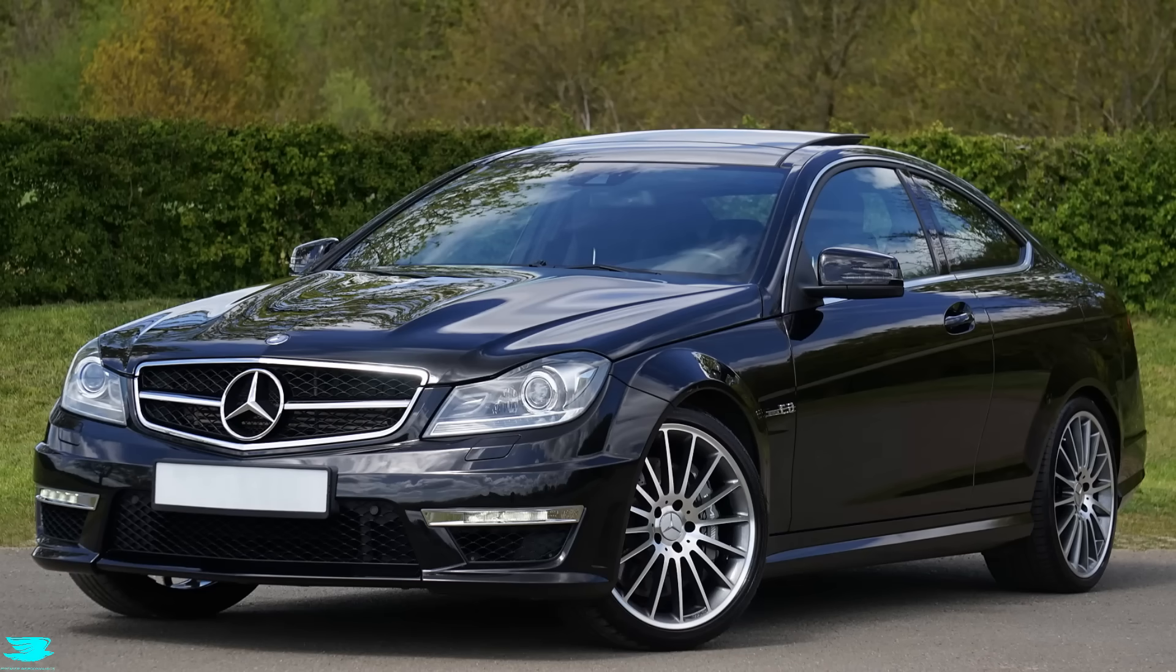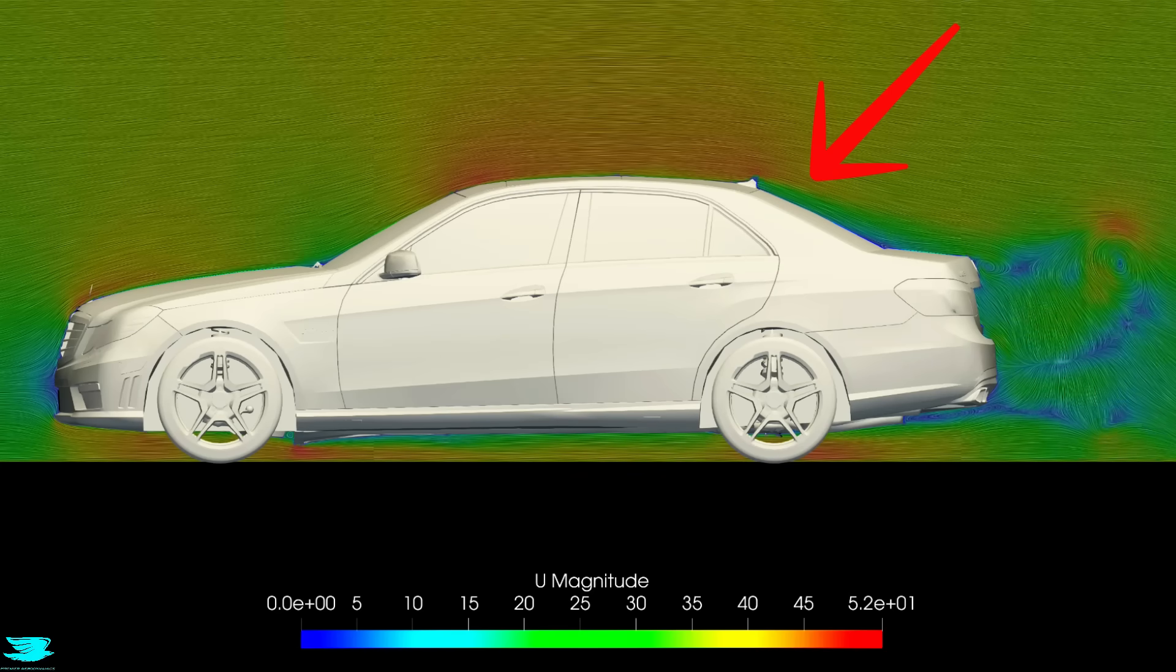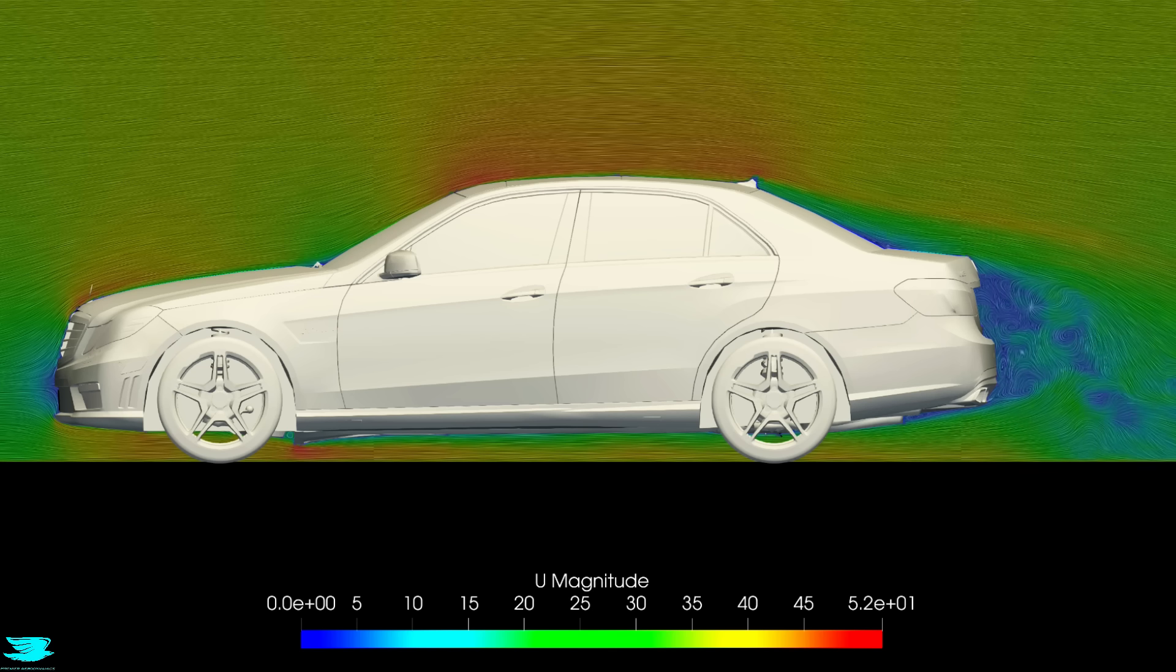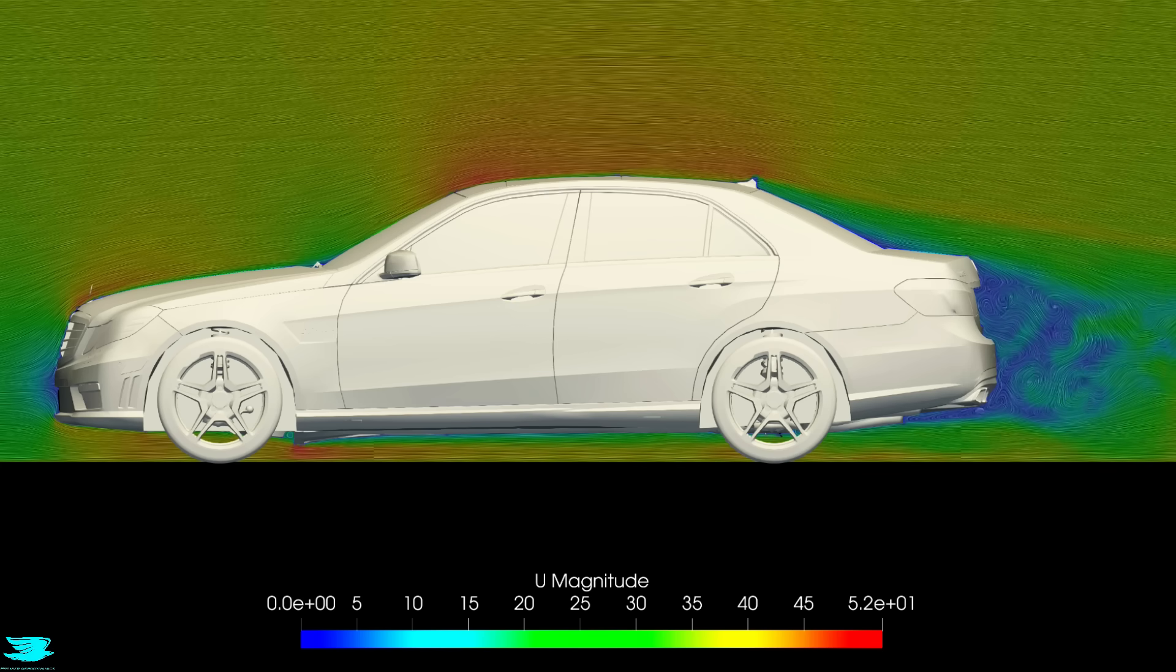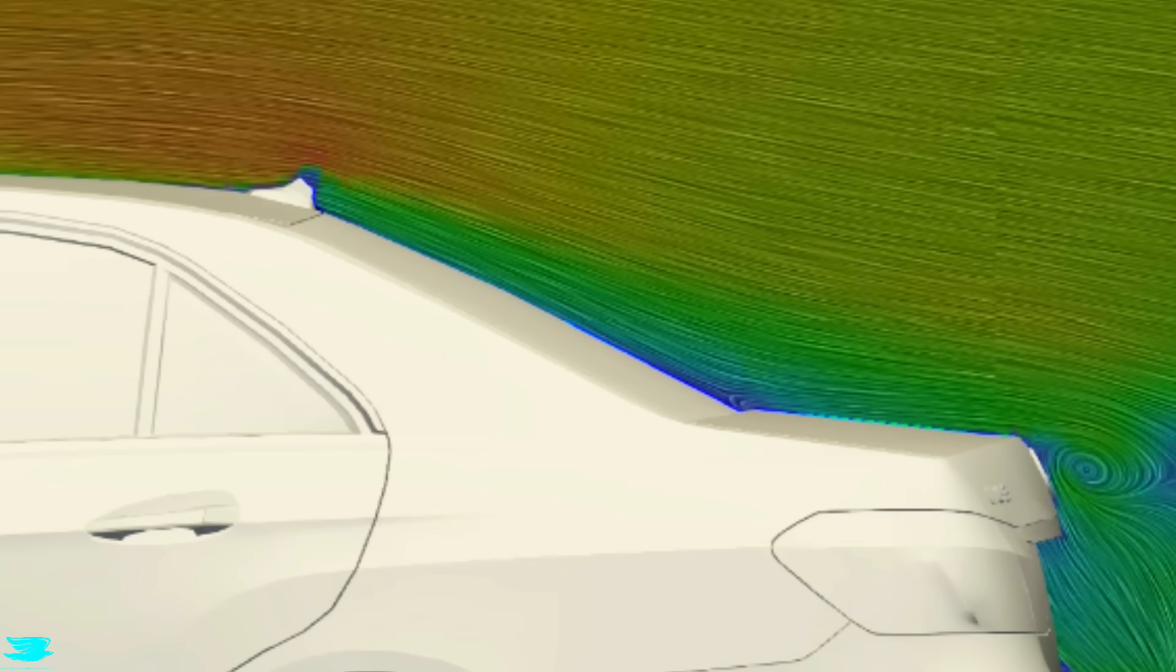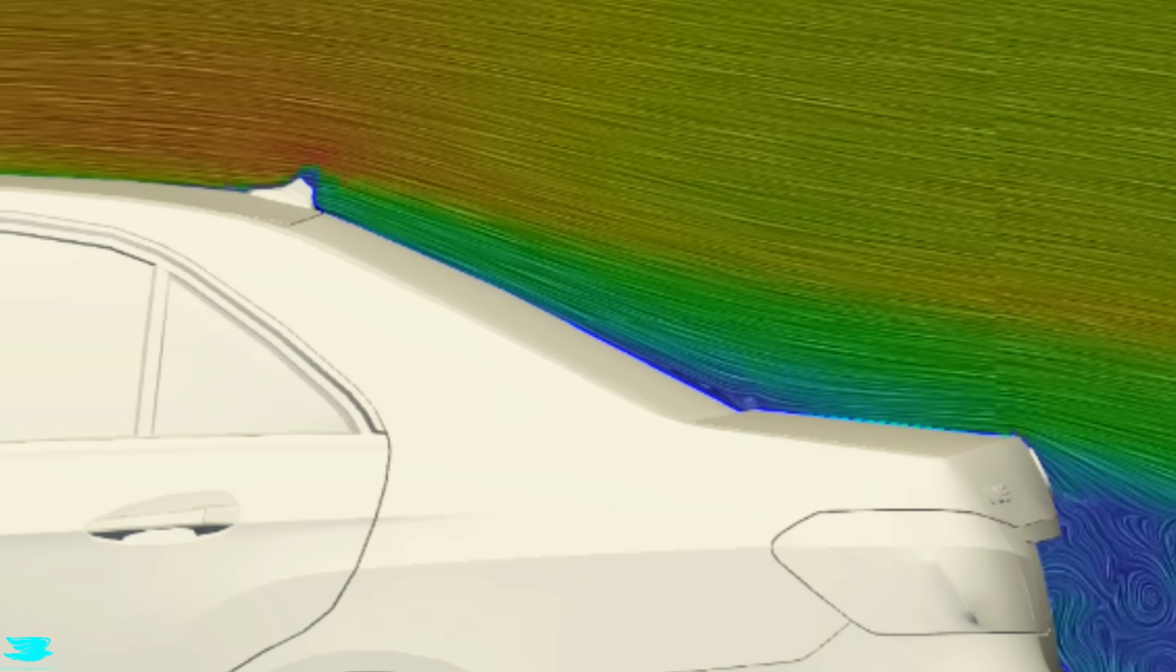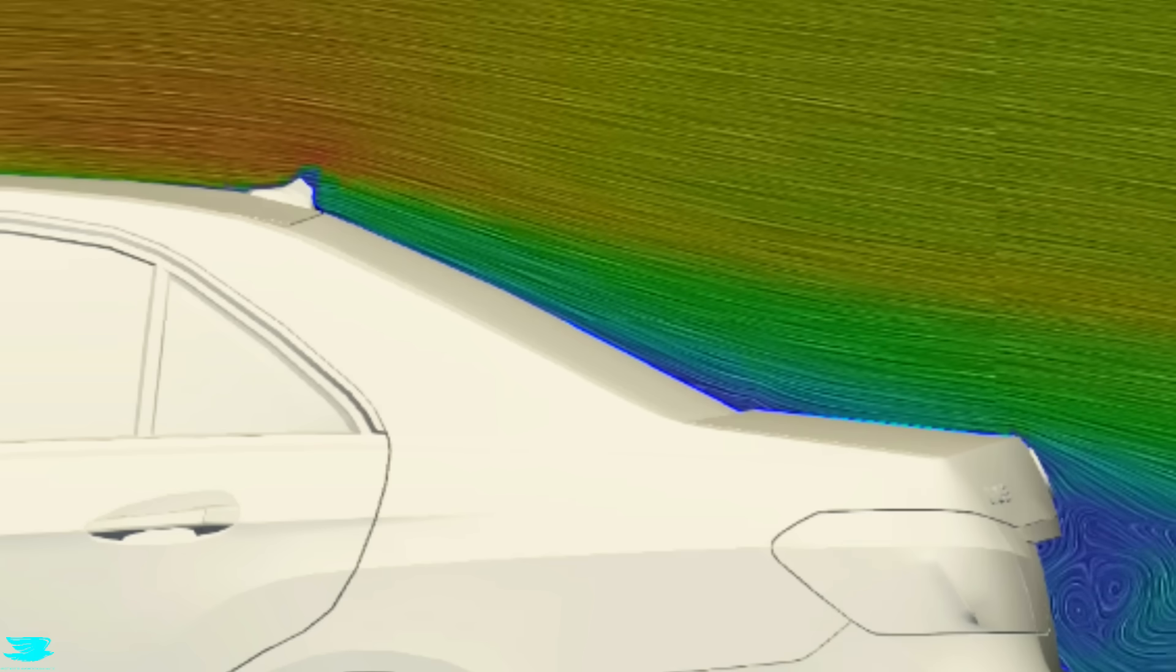That shows just how skilled the Mercedes aerodynamicists were. For example, the rear window is very steep. This is literally one of the first things you learn about aerodynamics: the steeper the rear window is, the more likely the flow is to separate over it. That then increases the wake size and the drag skyrockets. Here the E-Class is flirting with the line. It is very steep but the flow still stays attached to it, and we don't get a wake or the huge drag that comes with it.